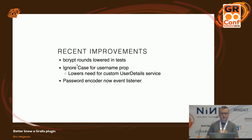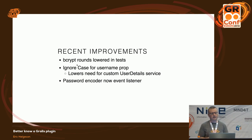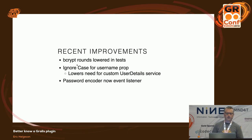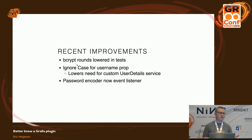Some recent improvements I've been a part of: Spring Security now uses lower bcrypt rounds in tests, because bcrypt is meant to be slow and you don't need thousands of rounds in a test — this can speed up your tests significantly when encoding passwords. We also added case-insensitive username lookup, so a capital E in an email isn't a different user than a lowercase e. This really lowers the need for a custom UserDetailsService just for case-insensitive lookups.